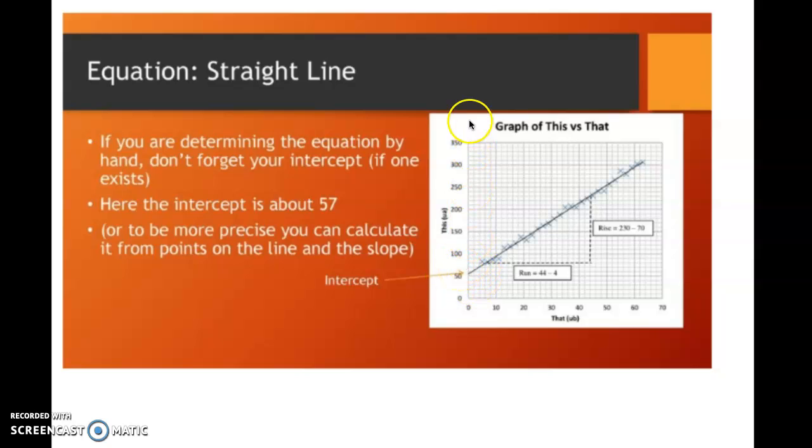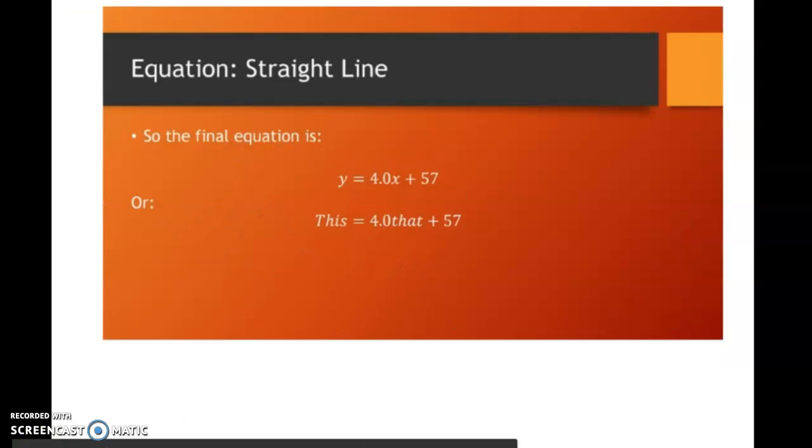You've got a graph. Use it. You must demonstrate that you can use a graph to find the intercept. So you read it and here you can see it's about 57. So that's your intercept. So that gives us a full equation. We now have y equals 4x plus 57.